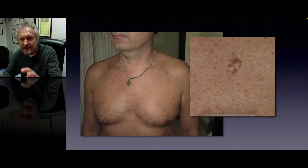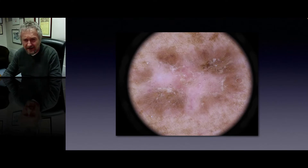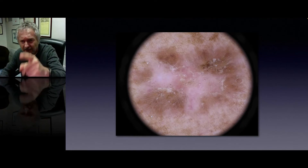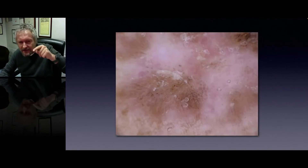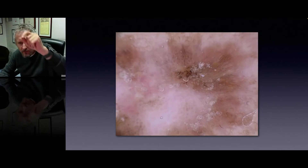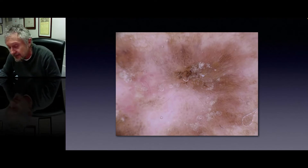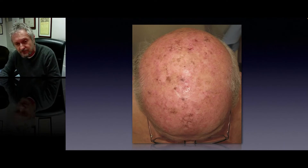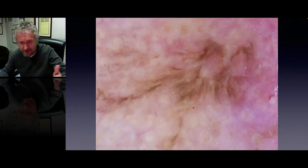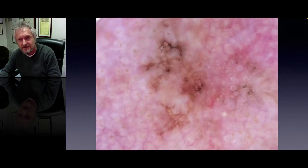Here is an example of a pigmented Bowen's disease which clinically looks clearly like a melanoma. But if you look carefully in the dermoscopy, apart from a white area that really looks like regression of a melanoma, at the periphery you see lines composed of dots or globules in a line. This is perhaps the only specific clue for the diagnosis of pigmented Bowen's disease. Here is another example of a Bowenoid actinic keratosis with pigmented lines in the periphery.